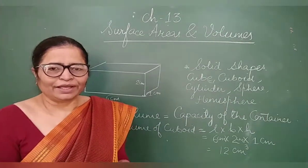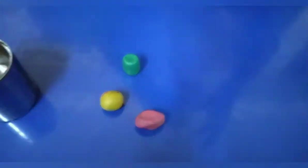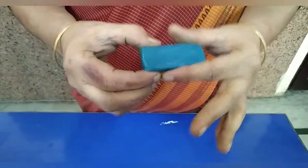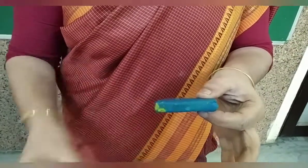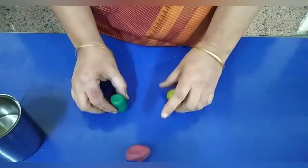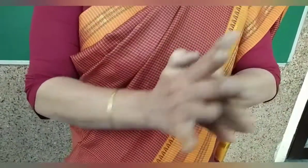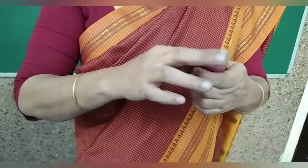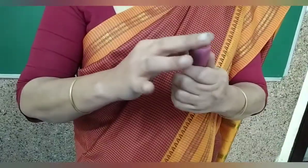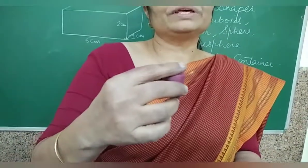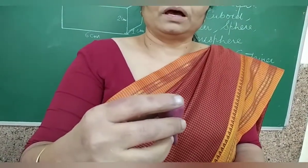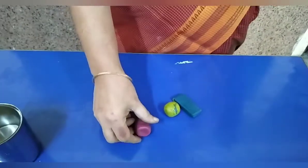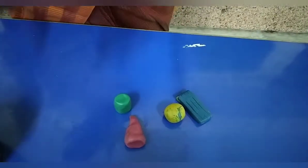Here I have these clay pieces. This shape is a cuboid. This is a sphere. This is a cylinder — you can say a road roller is also like this, and a glass is like this. And we have a cone also — cone is like our body cap.